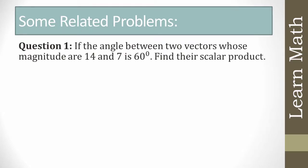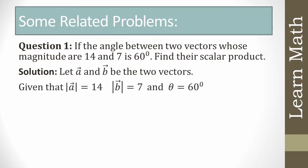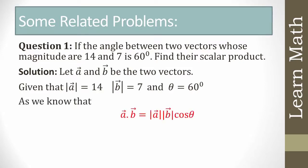Next question: if the angle between two vectors whose magnitudes are 14 and 7 is 60°, find their scalar product. Let |a| = 14, |b| = 7, and θ = 60°. Using the definition: a·b = |a||b|cosθ = 14 × 7 × cos(60°) = 14 × 7 × 0.5 = 49.